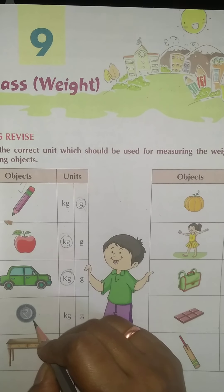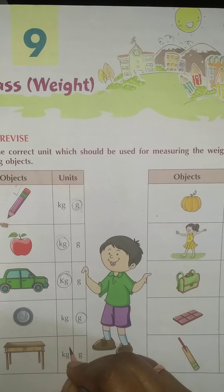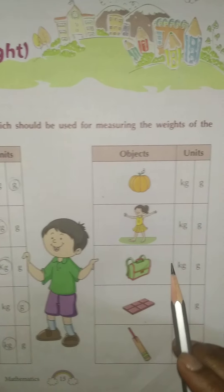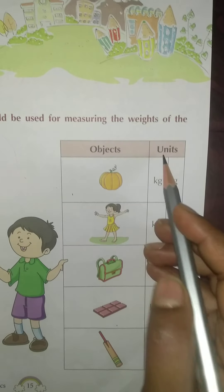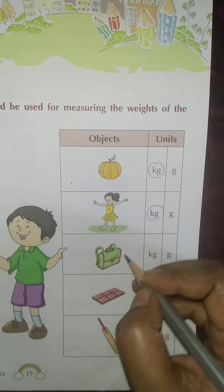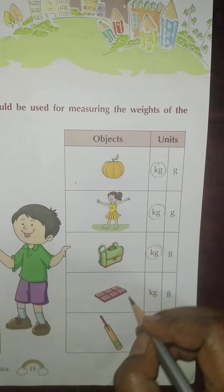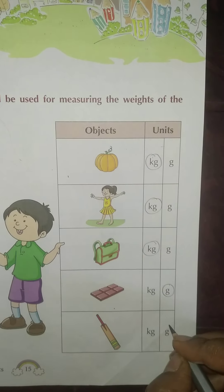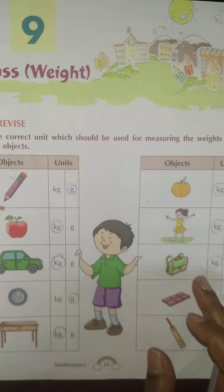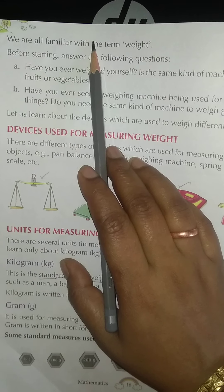A car is a heavy object so it is measured in kg. A coin is also measured in gram. A big table is measured in kg. A pumpkin is measured in kg. The weight of a girl is measured in kg. A bag is measured in kg. Chocolate is measured in gram. A bat is measured in kg. Complete the exercise this way.